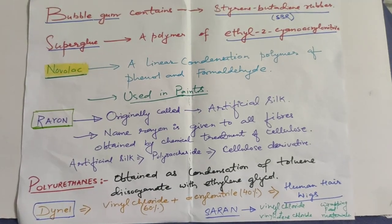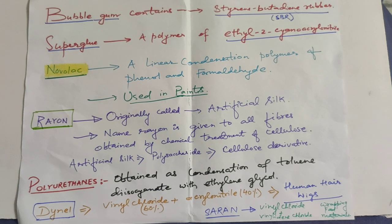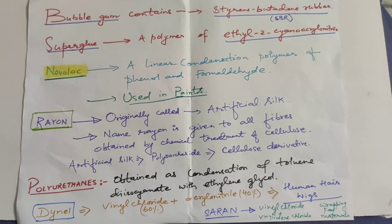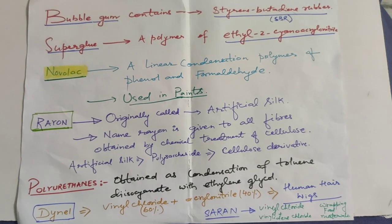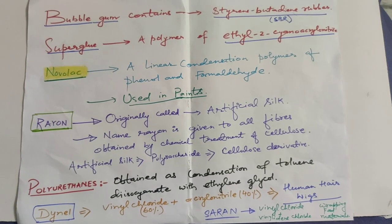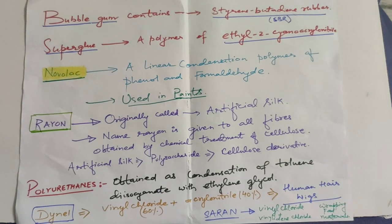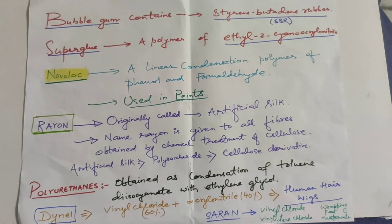Saran is a polymer formed by mixing vinyl chloride and vinylidene chloride. It is used for wrapping food materials.